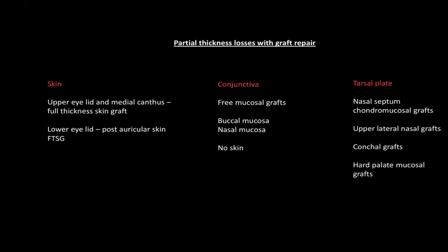For partial thickness losses — where either the anterior or posterior lamella has been resected — static grafts can be used because you have a vascular bed to place them on. If you lose the skin of the eyelid, a full thickness skin graft works well, with post-auricular skin as a good donor site. For isolated conjunctival defects, mucosal grafts will work.